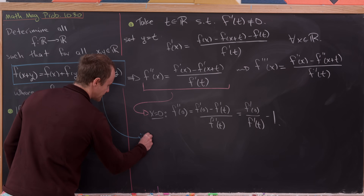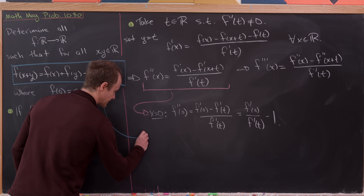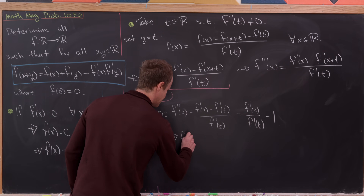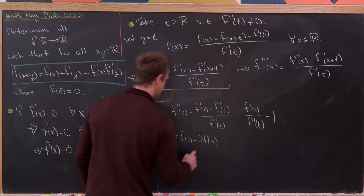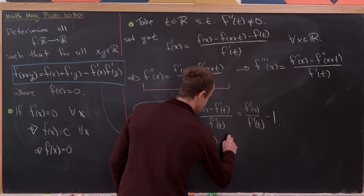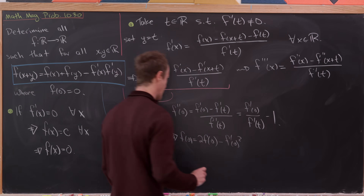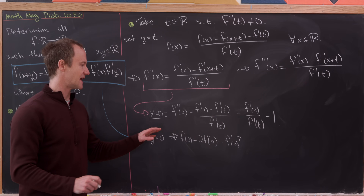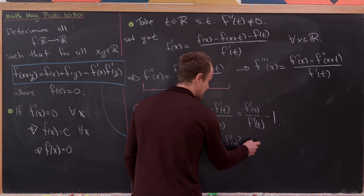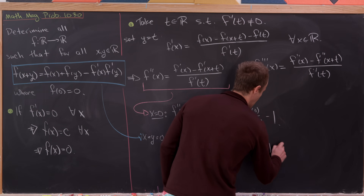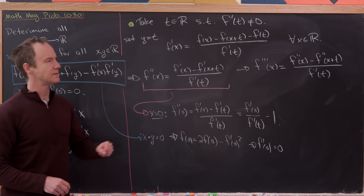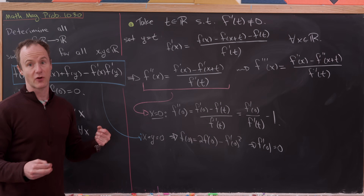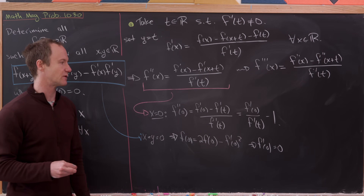Setting x=y=0 in our original functional differential equation gives f(0) = 2f(0) - [f'(0)]². We know f(0)=0 from the initial condition, so that means [f'(0)]² = 0, i.e., f'(0) = 0. Note this doesn't contradict our assumption that f' is not always zero — f' is simply forced to be zero at zero.